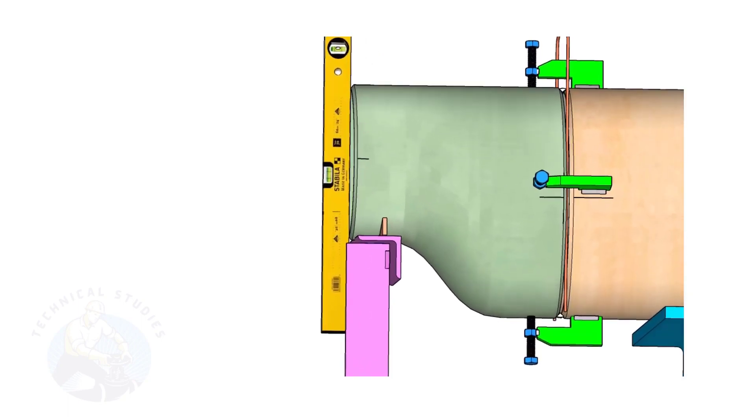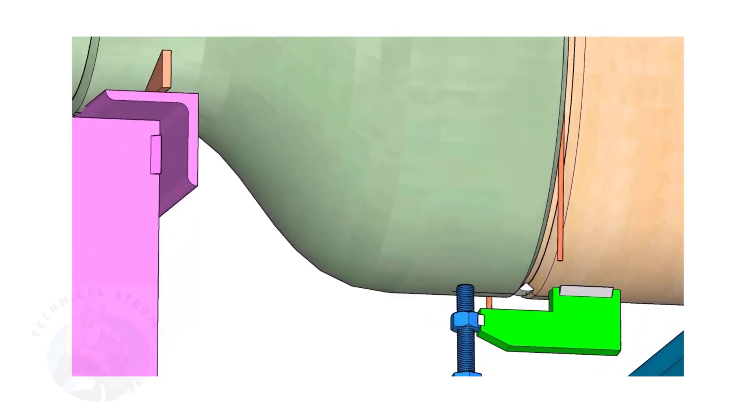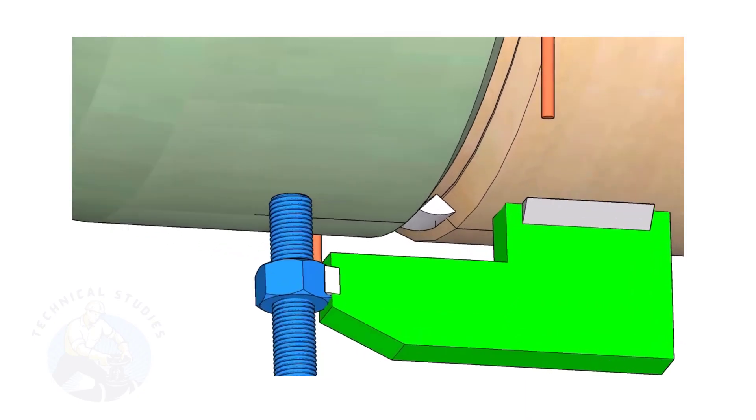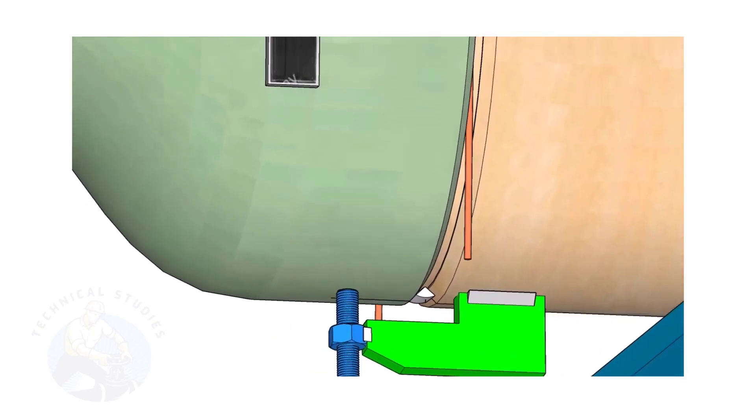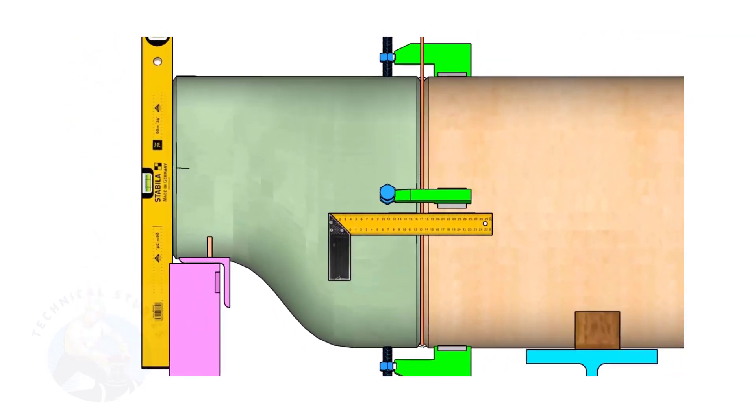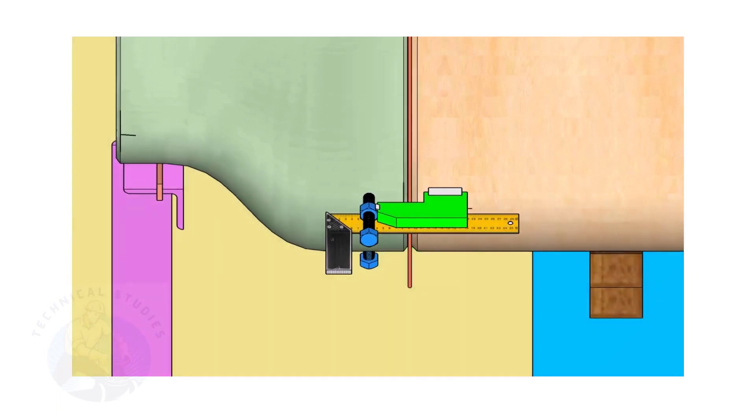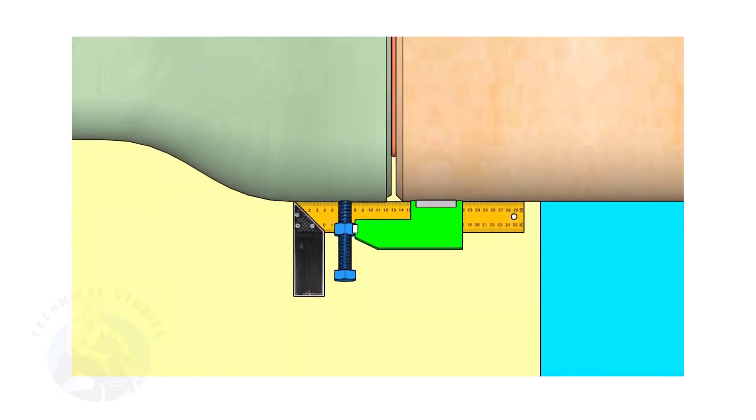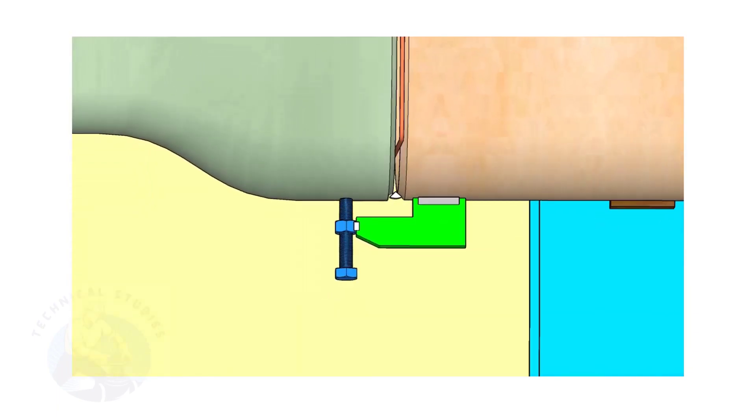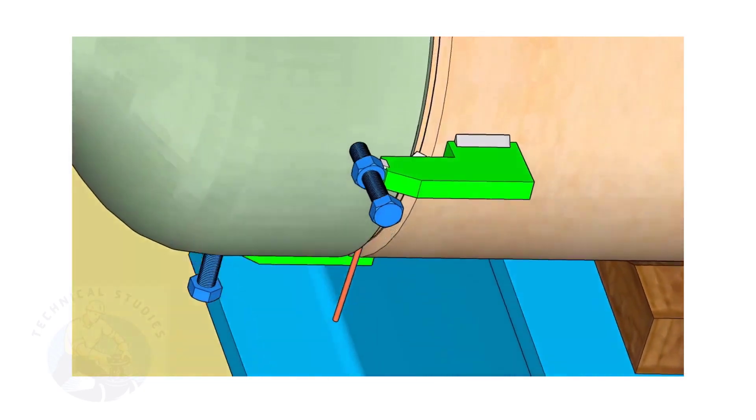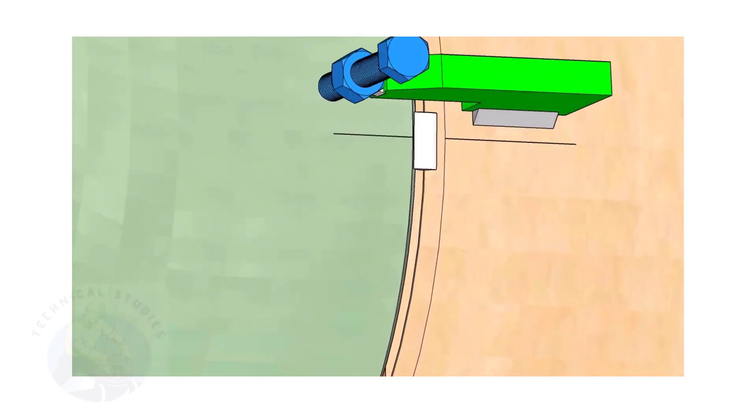Tack weld in the bottom side of the joint. Correct the straightness of the joint on both sides. If required, remove the gap rod. Tack weld on both sides.